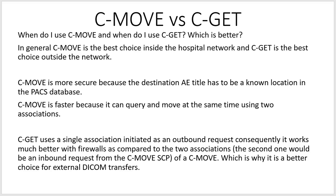This is especially effective for broad searches like all the chest x-rays done yesterday. For a specific patient like Mr. Bob Smith, C-GET works just as well. But for a broader search — all the chest x-rays done yesterday or all the Mr. Smiths in the hospital in the last two weeks — C-MOVE can query, find the first result, start moving it on the second association, and continue finding more results while simultaneously moving data. C-GET uses a single association initiated as an outbound request, so it works much better with firewalls.